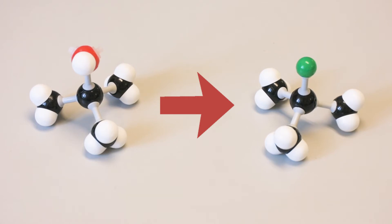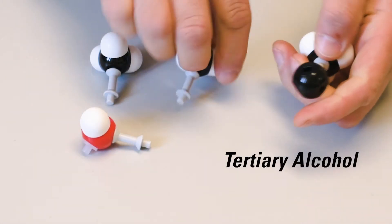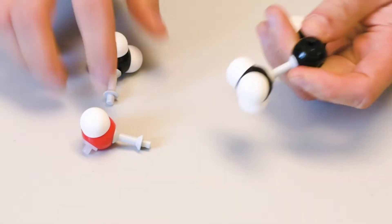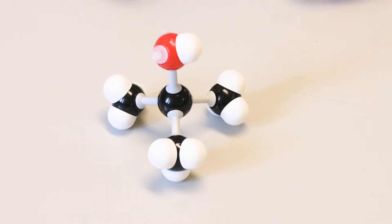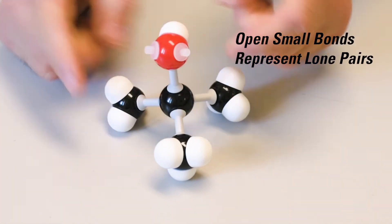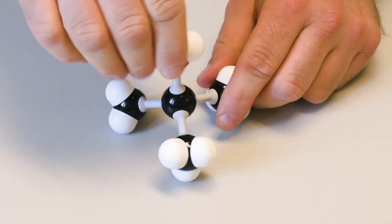A good example of an SN1 reaction is that of a tertiary alcohol. These involve a tertiary carbocation, which is the most stable carbocation. Note that open bonds on oxygen represent lone pairs of electrons.